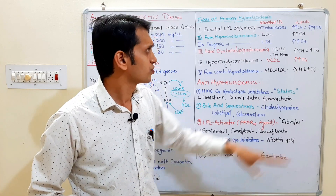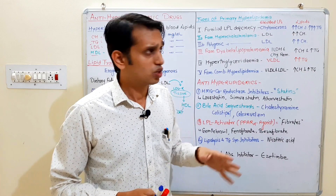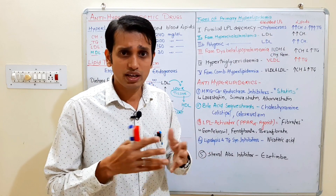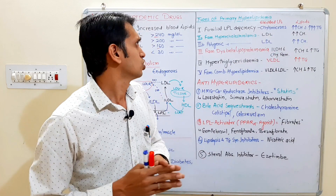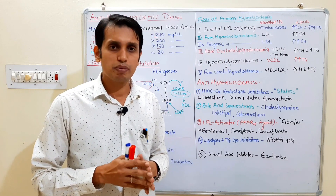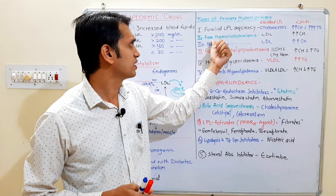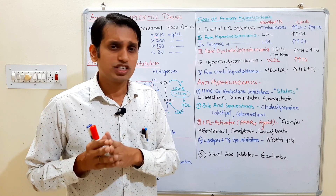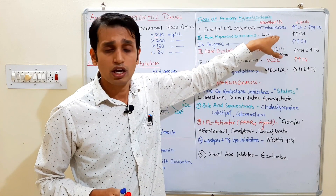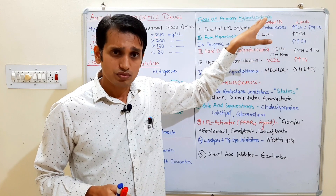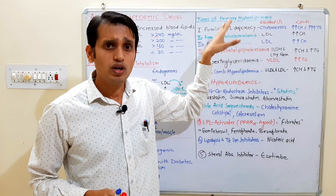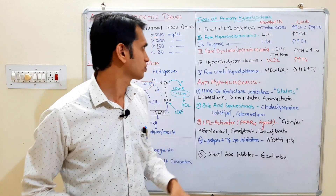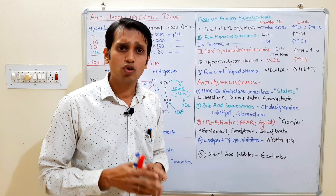In Type I, lipids TG and TC are both elevated. Next is Type IIa hyperlipidemia, also known as familial hypercholesterolemia. In this type, the main lipoprotein that is increased is LDL. Next, Type IIb is polygenic hypercholesterolemia, which is multifactorial — whereas Type IIa is caused by a single genetic factor.